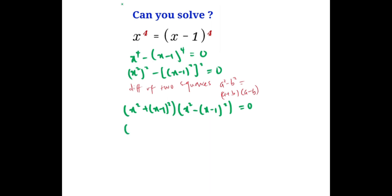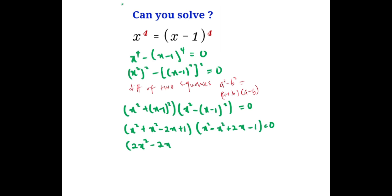This is the same thing as x squared plus x squared minus 2x plus 1, times x squared minus x squared plus 2x minus 1, equals 0. So here we get 2x squared minus 2x plus 1, and the x squared terms cancel out leaving 2x minus 1.